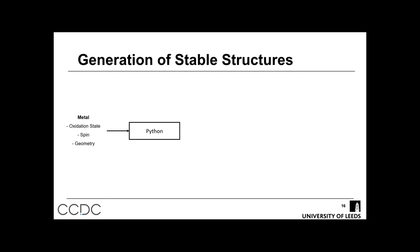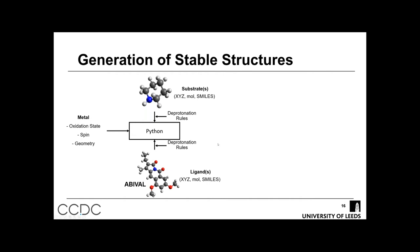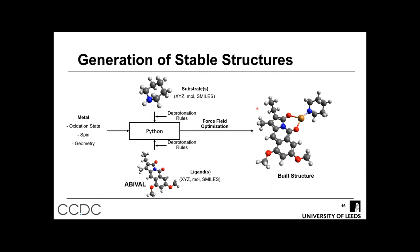For generating stable intermediates, we start with the metal — in this case, copper — and define its oxidation state (copper I), spin (zero), and geometry (trigonal planar). We take our substrates as XYZ, mol, or SMILES files and apply deprotonation rules, forcing deprotonation where the nucleophile is deprotonated in the final structure. We also input the ligand structure — for our example, ABIVAL from the CSD — apply deprotonation rules to deprotonate any coordinating sites that shouldn't be protonated, and do a quick force field optimization to give a built structure for intermediate B.